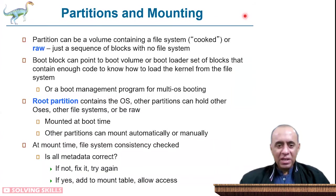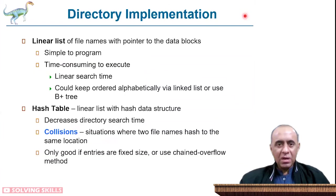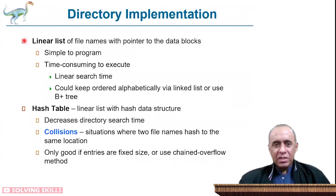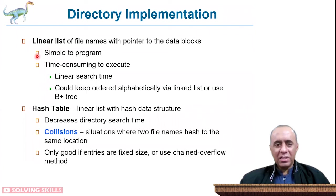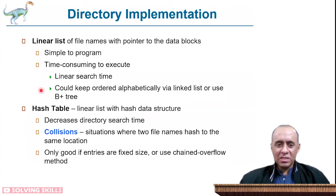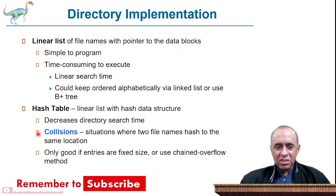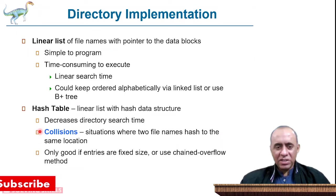FAT is a variant of different algorithms used to store block numbers inside the directory structure. Directory implementation is at a higher level than files. It can use a linear list of file names with pointers to data blocks — simple to program but time-consuming to execute due to linear search. Trees can make this process faster. A hash table is a linear list combined with a hash data structure that decreases directory search time, but can have collisions where some entries hash to the same location, as you may have studied in data structures.